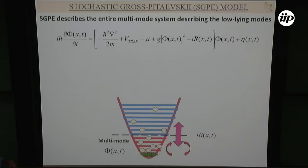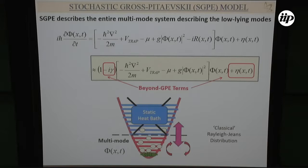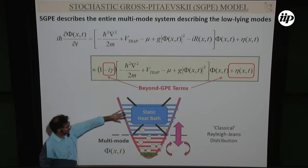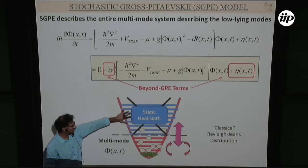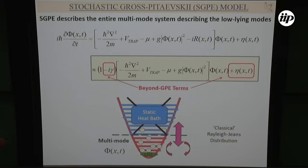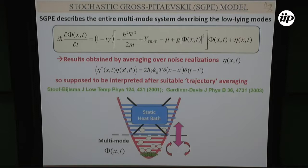Under certain approximations — basically throwing away the Bose-Einstein distribution function and assuming those atoms are static — you actually relax to a Rayleigh-Jeans distribution. There is a rate that transfers particles, but nothing is happening to this bath part. You can rewrite it as a Gross-Pitaevskii equation with a dissipation term plus a noise term, and those two are coupled to satisfy the fluctuation-dissipation theorem, related to the temperature in the system.